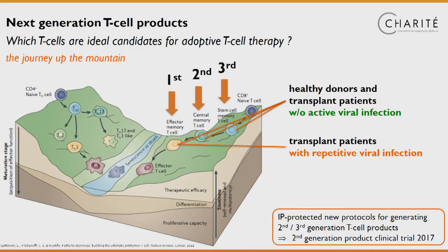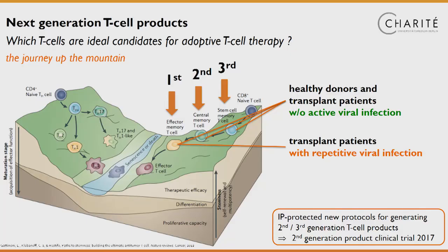This is a Waddington view which conceptualizes an epigenetic landscape. On top of the hill we see cells with the highest therapeutic efficacy, the least differentiation, and the greatest proliferative capacity. On top of the hill we see T-cells with even stem cell capacities, followed by the central memory cells, and almost in the valley we see the so-called effector memory cells.